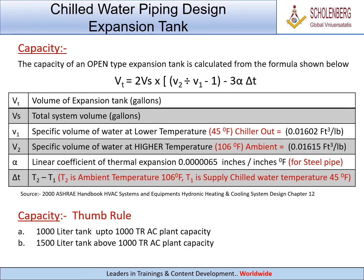Capacity. The capacity of an open type expansion tank is calculated from the formula: Vt equals 2Vs multiplied by (V2 divided by V1 minus 1) minus 3 alpha delta T. Capacity thumb rule: A. 1,000 liter tank for up to 1,000 TR plant capacity. B. 1,500 liter tank for above 1,000 TR plant capacity.